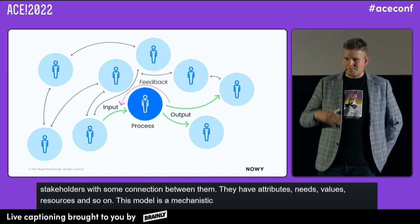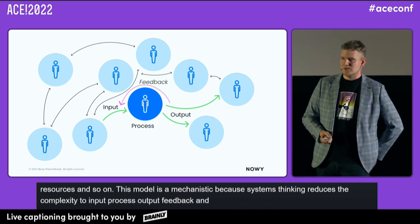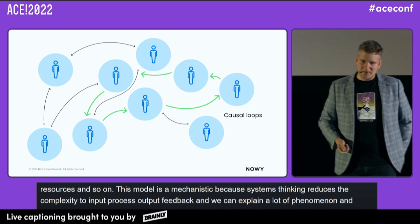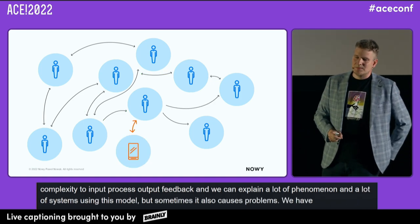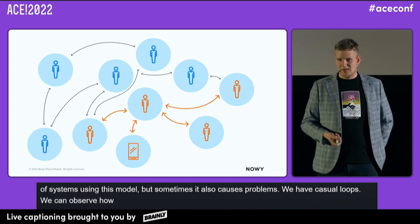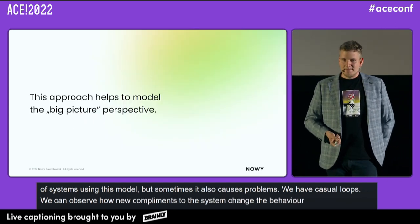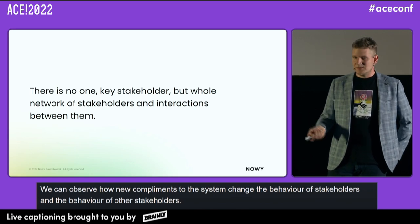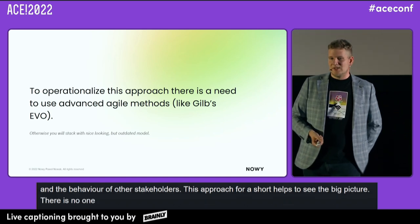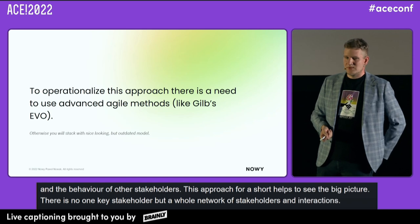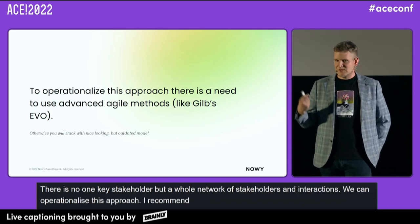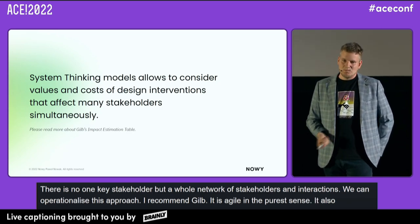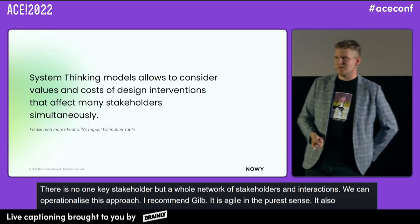This model is a little bit mechanistic because systems thinking reduces complexity into input-process-output feedback loops. We can explain a lot of phenomena using this model, but sometimes it also causes problems. We've got causal loops — if you're familiar with systems dynamics — we can observe how adding new components to the system changes the behavior of stakeholders. This approach helps to see the big picture: no one key stakeholder, but a whole network. I really recommend Tom Gilb's EVO method — it's agile in a pure sense. It also allows considering values and costs of design interventions.